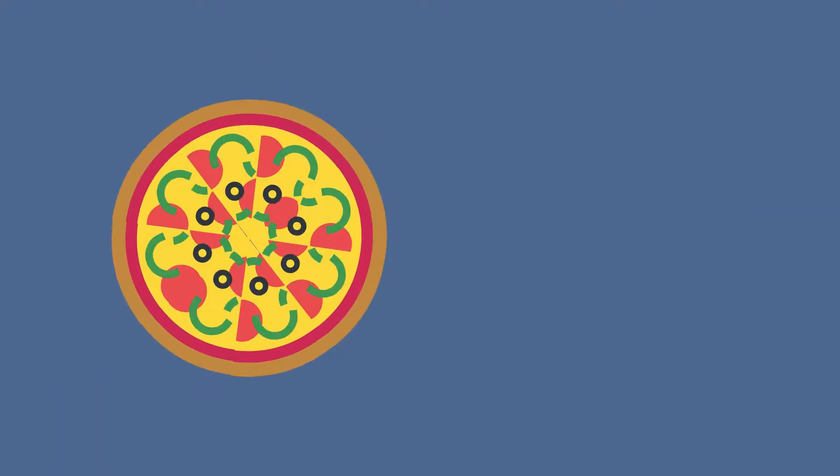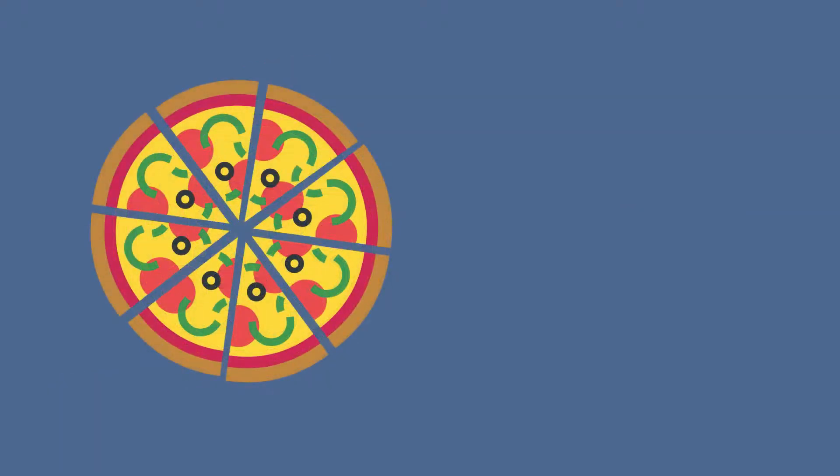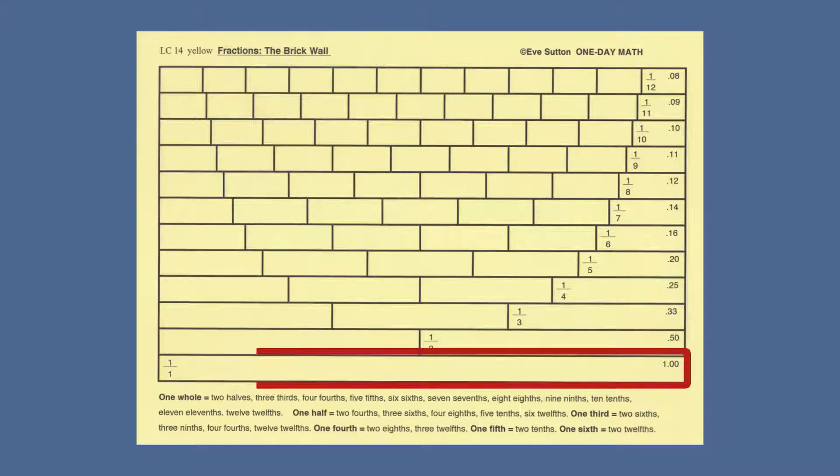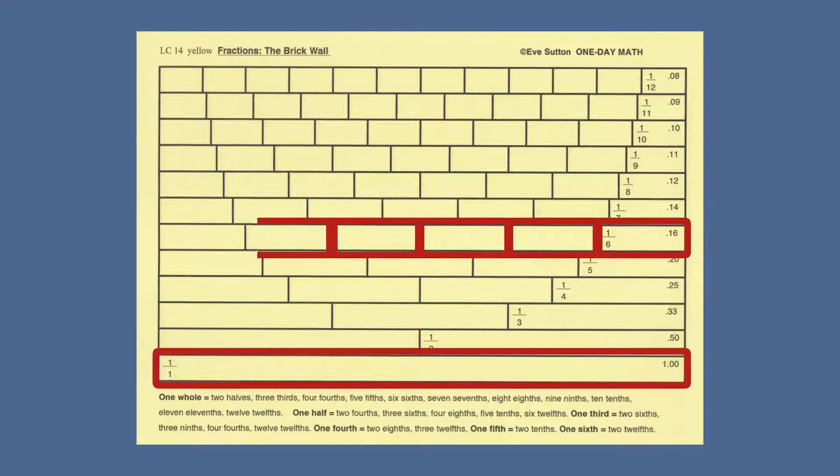If one pizza is cut into eight equal slices, you will have eight-eighths. You can see the same thing on the brick wall. One long brick at the bottom can reach all the way from the right side to the left side, but if the brick is cut into fractions, it will take several of these smaller bricks to cover the same distance.